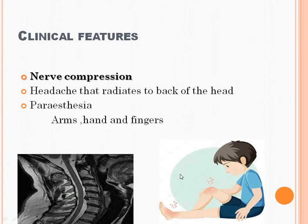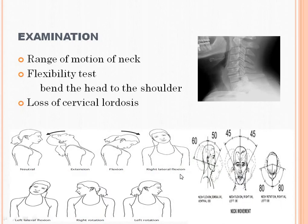Examination: first we assess the range of motion. Flexion of the head is 50 degrees, extension is 60 degrees, lateral flexion to the right side is 45 degrees and left side is 45 degrees. Rotation of the head to the right and left side is 80 degrees each, so 160 degrees total rotation.